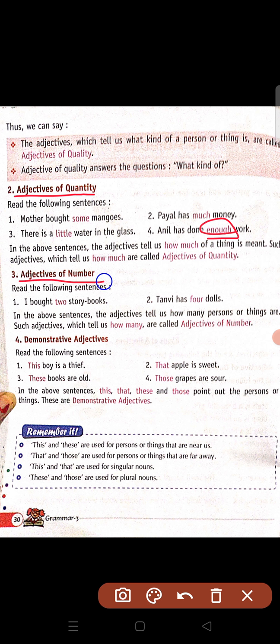Third: adjective of number. Read the following sentences. I bought two story books — usne story books kitnay kharidi? Two. Tanvi has four dolls — Tanvi ke paas kitnay dolls hain? Four dolls. In the above sentences, the adjectives tell us how many persons or things there are — means how many, kitni. Story books two hain, dolls four hain.